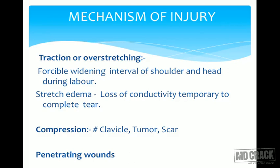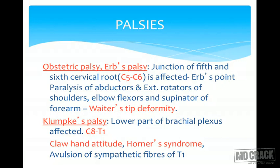Coming to the important palsies: obstetric palsy, also known as Erb's palsy, is the junction of the fifth and sixth cervical root — C5 and C6. There is paralysis of the abductor muscles and external rotators of the shoulder, elbow flexors, and supinators of the forearm. Classically it gives a deformity where the person's hand is adducted and internally rotated — it looks like a waiter's tip, also known as policeman's tip.